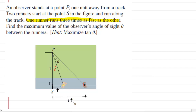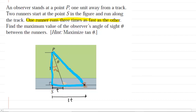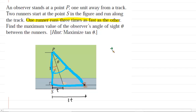Those are some important labels to keep in mind. Next, what we want to do is focus our attention on that larger right triangle. We might want to outline it here in blue just so we can visualize it. What we can see is that this large angle right here would be the sum of theta and alpha. And what we're going to do is find the tangent of that angle — the tangent of theta plus alpha.